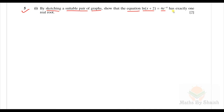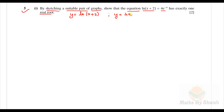If we draw the two pair of graphs and they intersect at only one point, it means they have exactly one real root. We are going to plot y = ln(x+2) and y = 4e^(-x). We know the shape of these graphs — the graph of ln(x) looks like this, and e^(-x) looks like this.